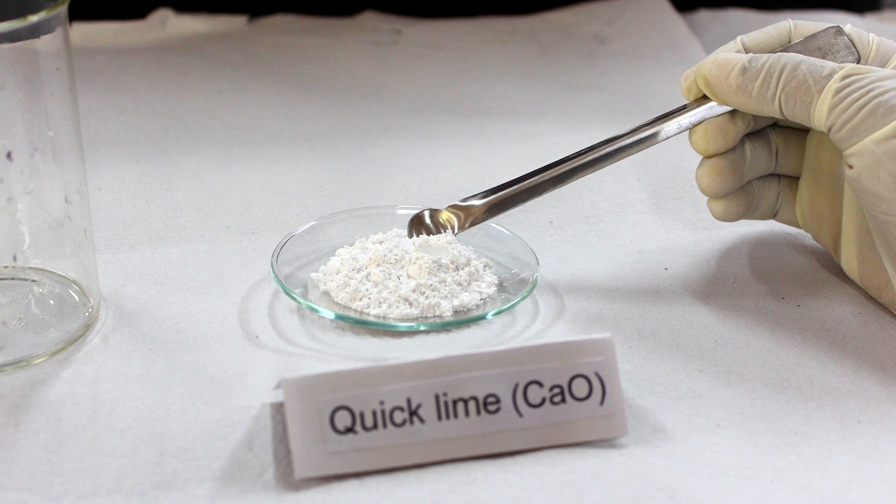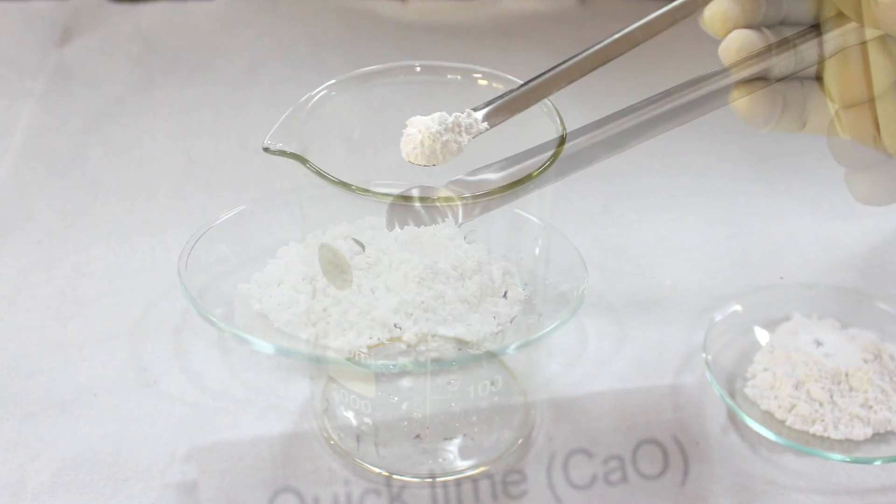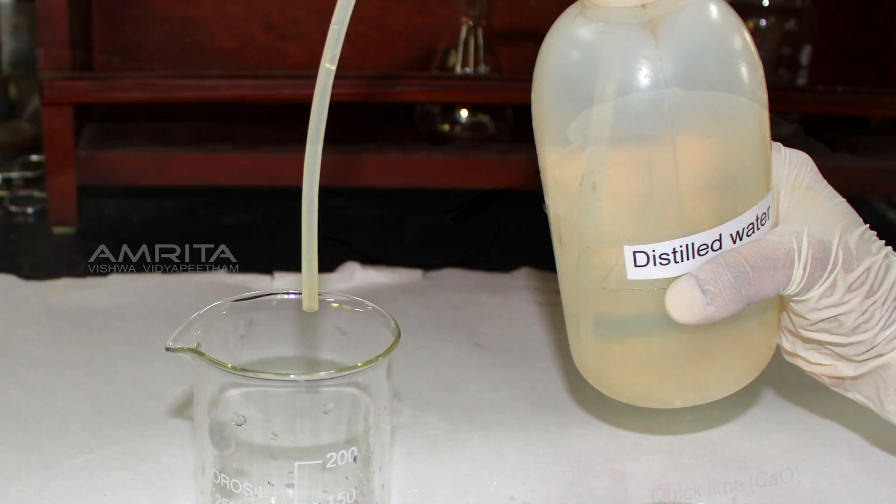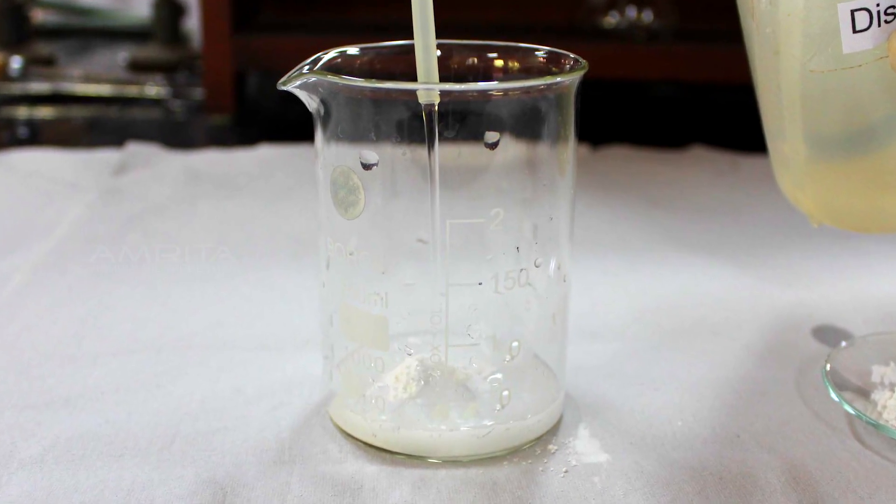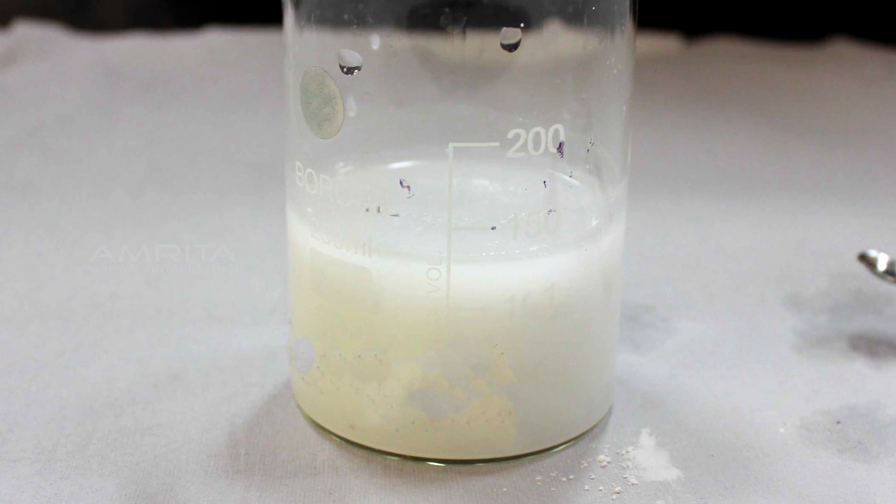Procedure: Transfer a small quantity of quicklime or calcium oxide to a beaker using a spatula. Slowly add distilled water into this beaker. Pour enough water so that quicklime remains submerged in water.